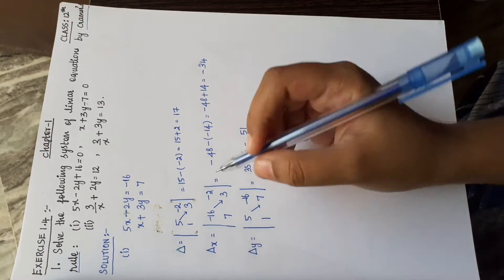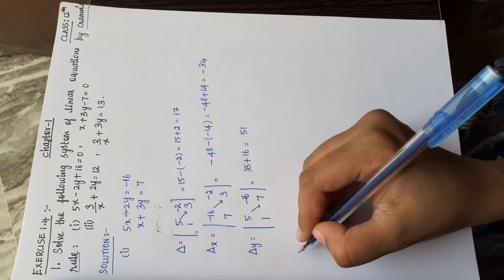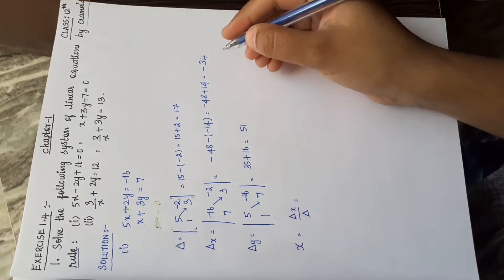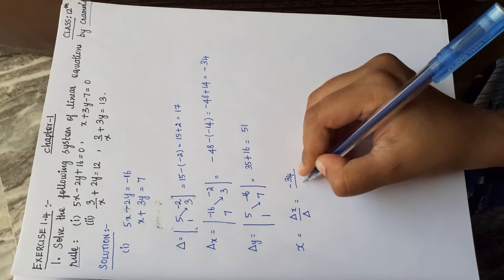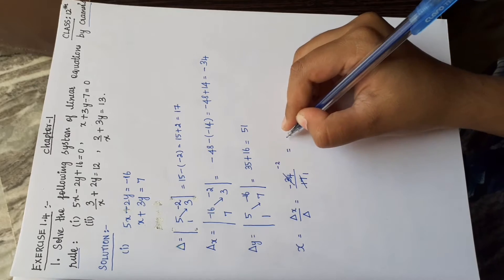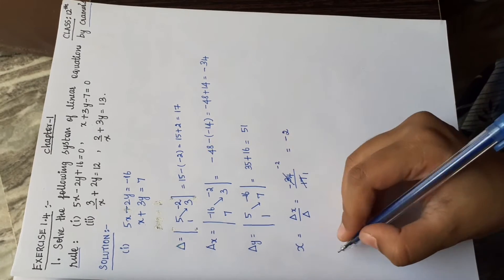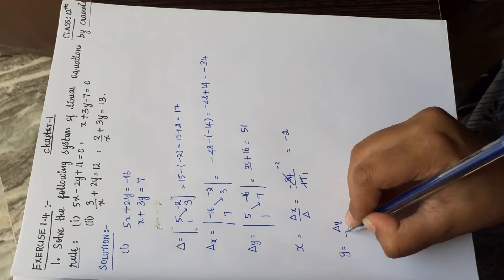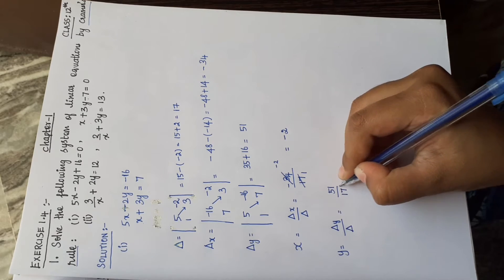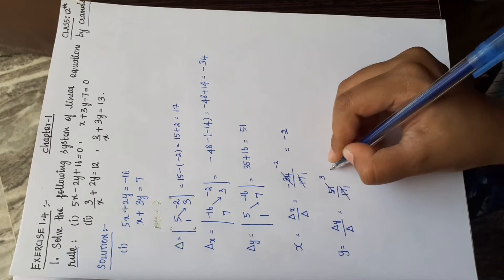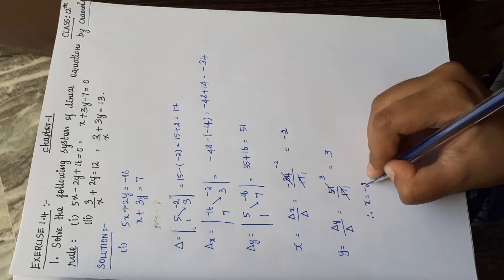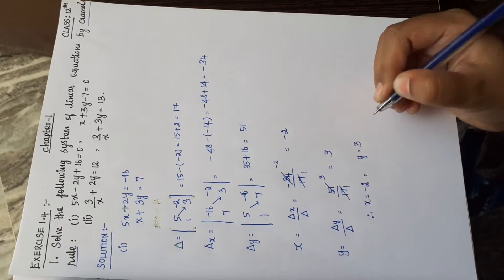Now we have delta = 17, delta x = -34, delta y = 51. Therefore x = delta x / delta = -34 / 17 = -2, and y = delta y / delta = 51 / 17 = 3. So x = -2 and y = 3.